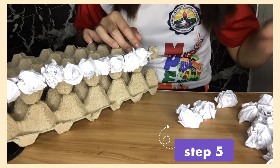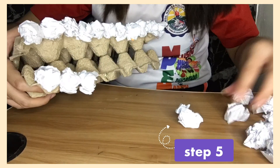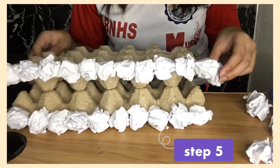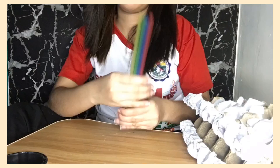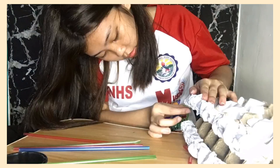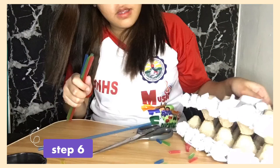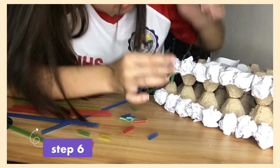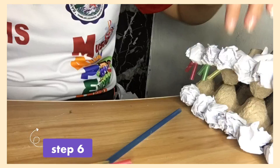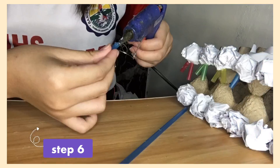The next step was to place the crumpled heads on top and on the bottom — I started with the top and then did the bottom. After that, I used straws for the tails, and I chose different colors because having the same color for all the tails looked too plain and boring.